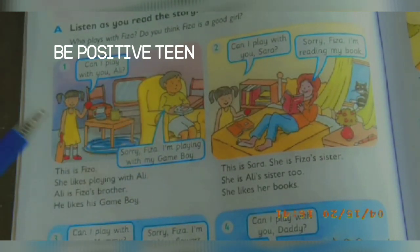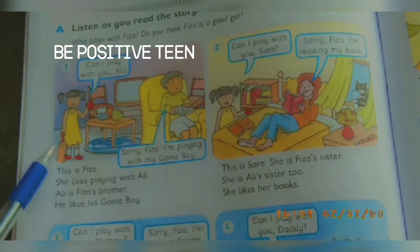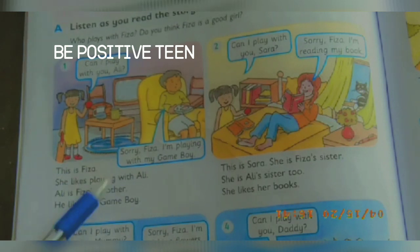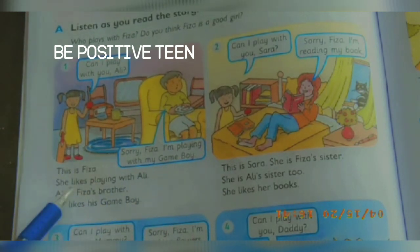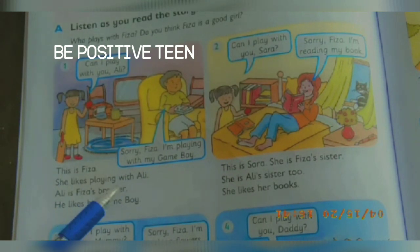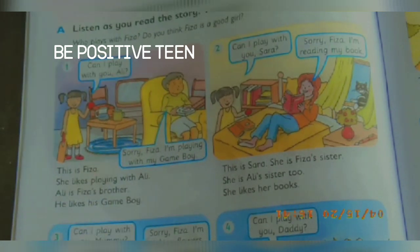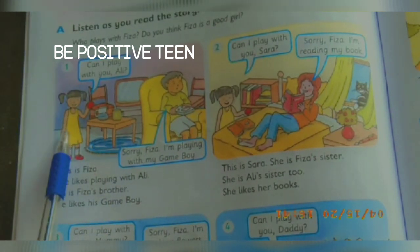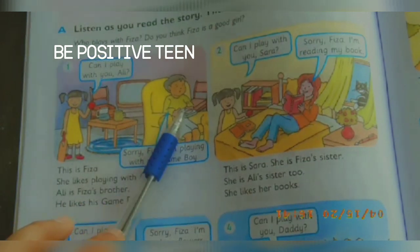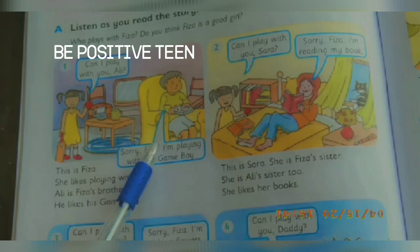Now we read the sentences: This is Fizza. She likes playing with Ali. Ali is Fizza's brother. He likes his game boy. So Fizza likes playing with her brother, but her brother likes playing with his game boy.